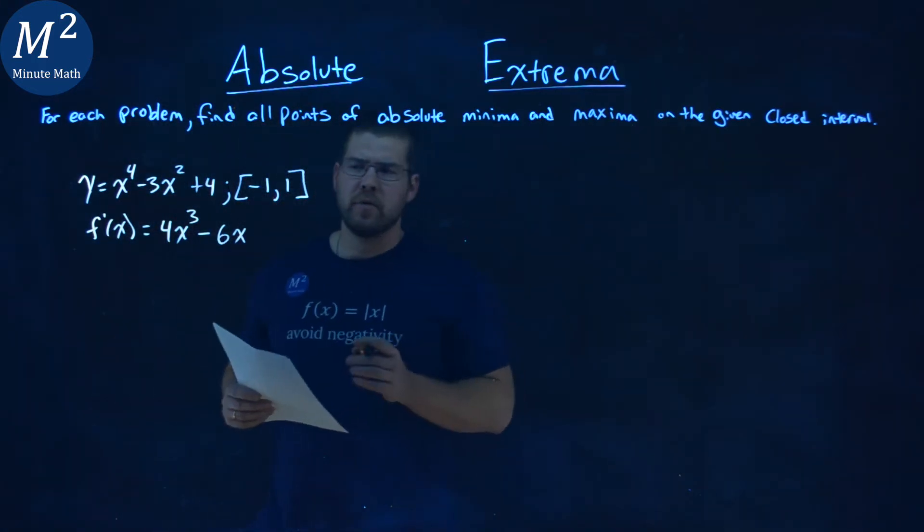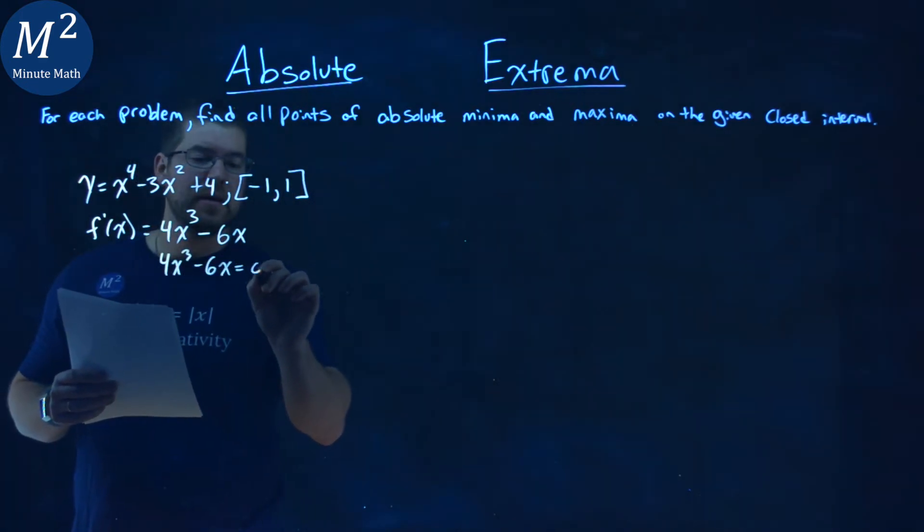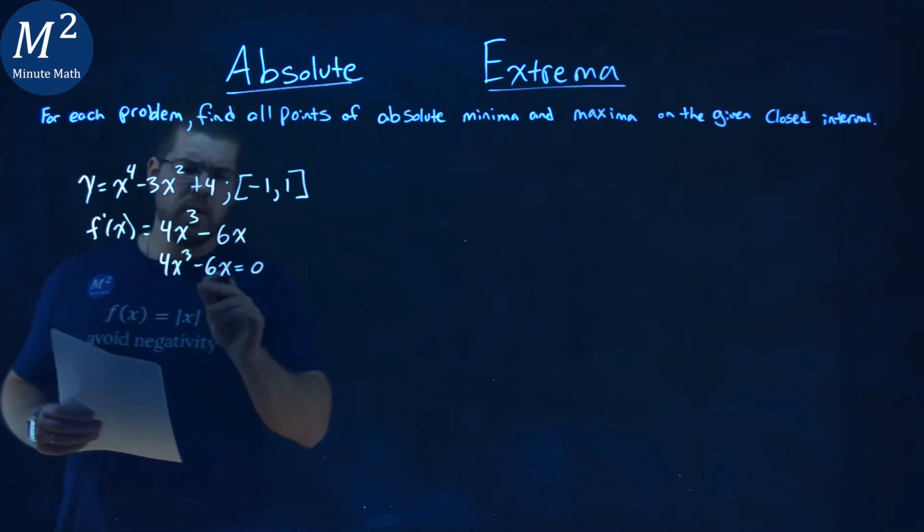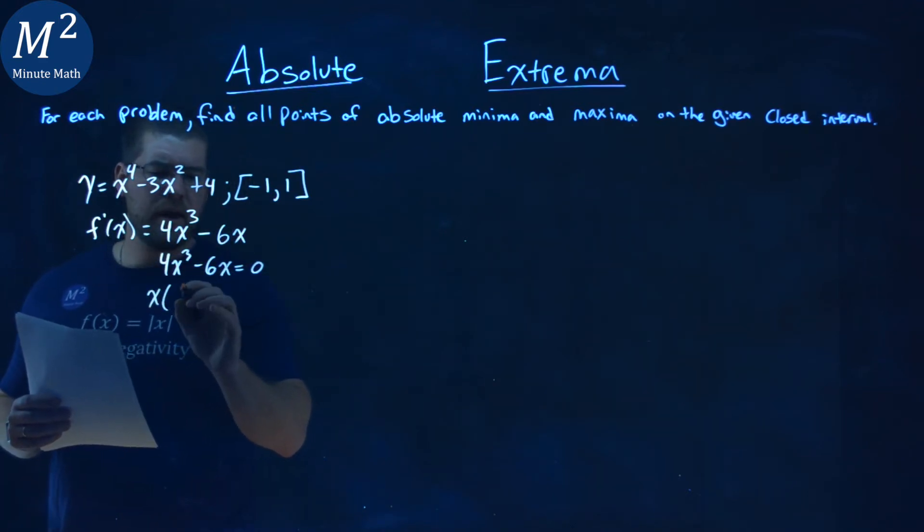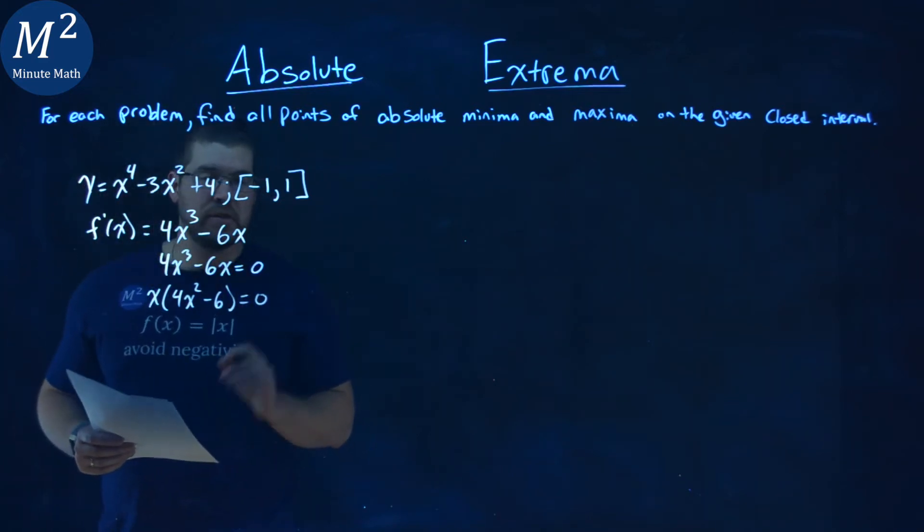I take my derivative and set it equal to 0. 4x to the third power minus 6x equals 0. Pull out an x here, and we have x times 4x squared minus 6 equals 0, and we can set both parts individually equal to 0.